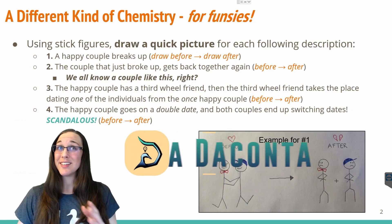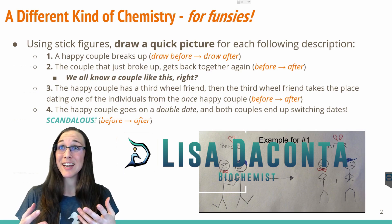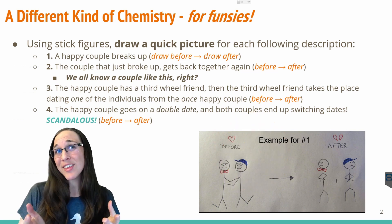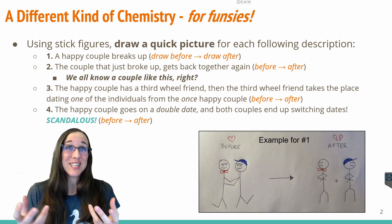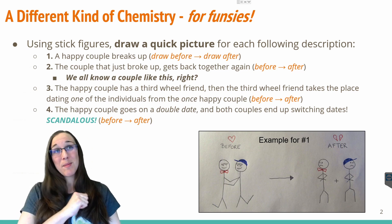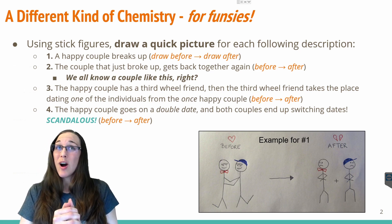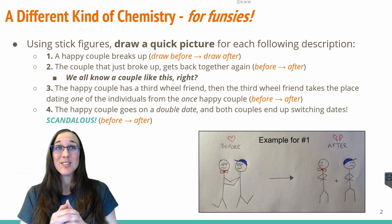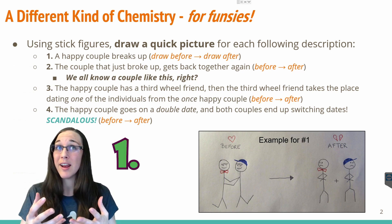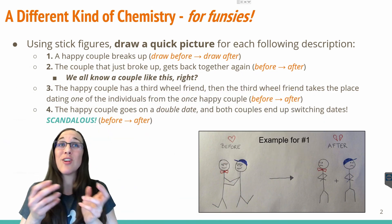Before we get into what the different types of chemical reactions are, I like to have a little bit of fun here with relating the chemical reactions to types of relationships, because that's really all the atoms are doing. They are changing out their relationship status on a molecular level. So what I'd like you to do is if you have a paper nearby, go ahead and draw out what these scenarios would look like. So first scenario, make sure you number them too, number one on your paper, you would draw a happy couple breaks up. So draw before and draw after.